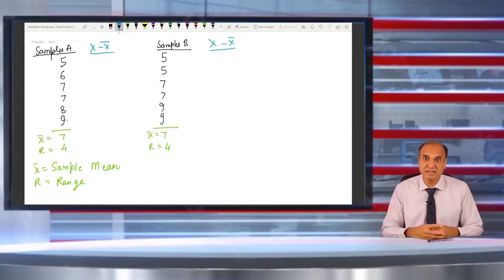Second is 6 minus 7, that is minus 1. Third is 7 minus 7, 0. Then again 7 minus 7, 0. And then 8 minus 7 is 1, and 9 minus 7 is 2. And if I take the sum total, oh it's 0.